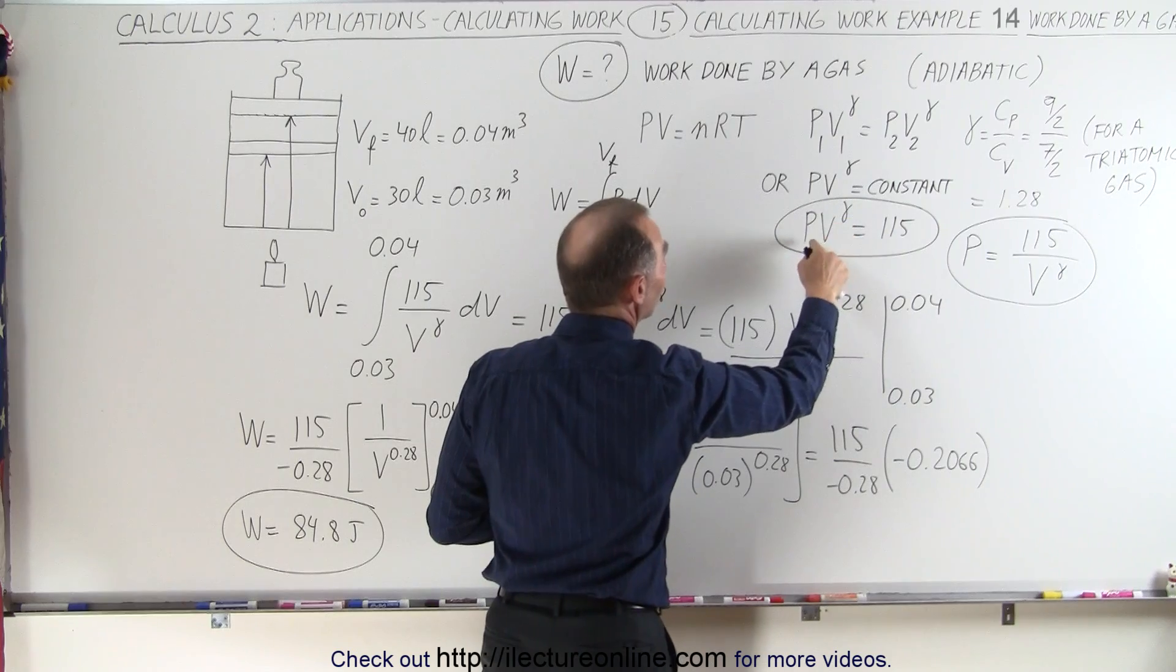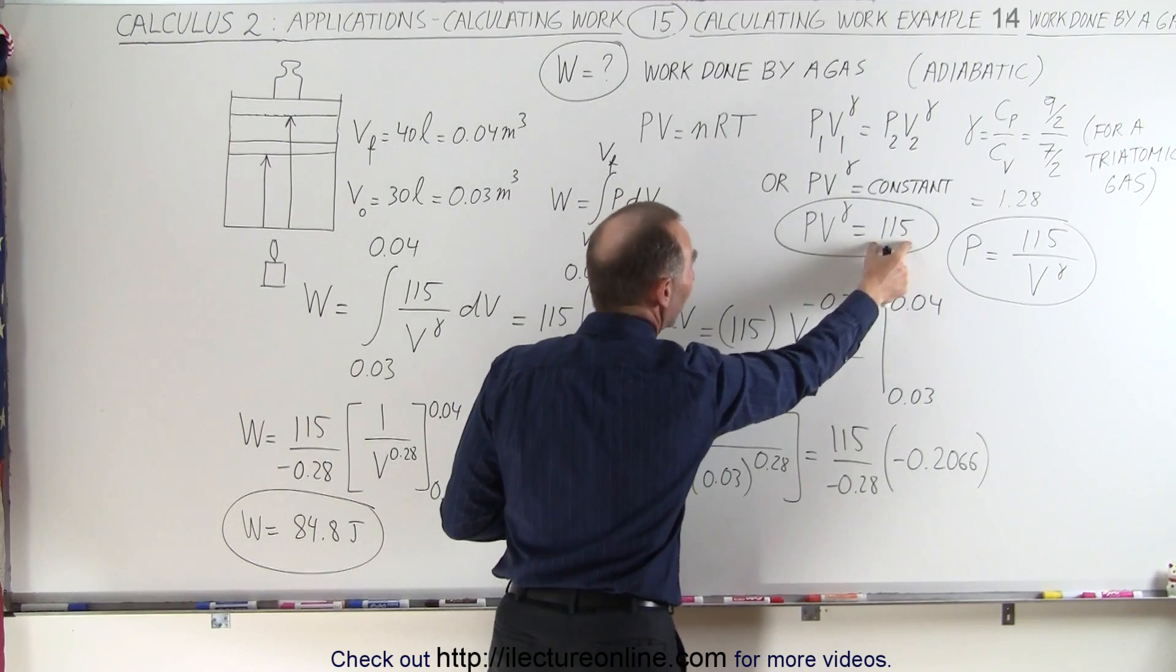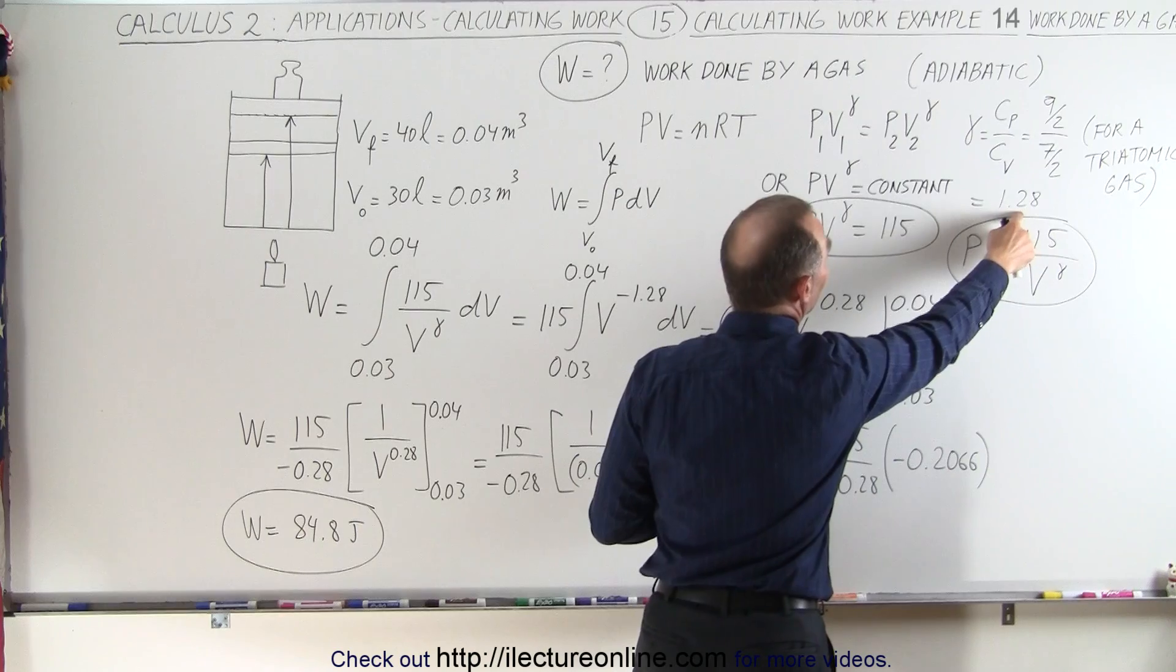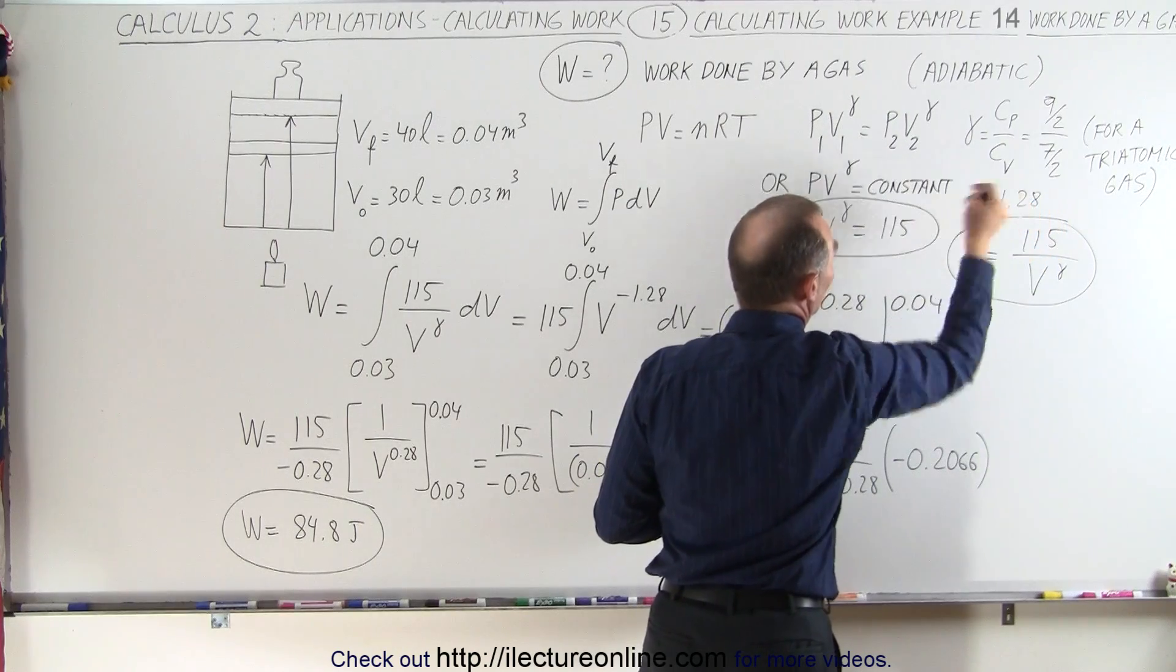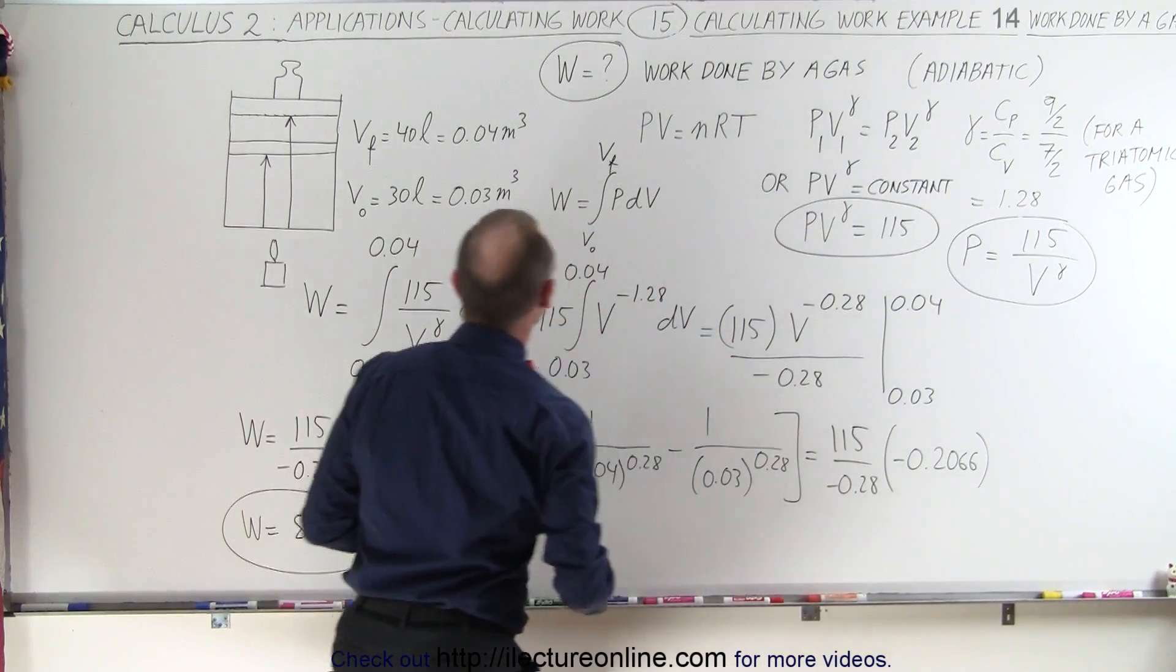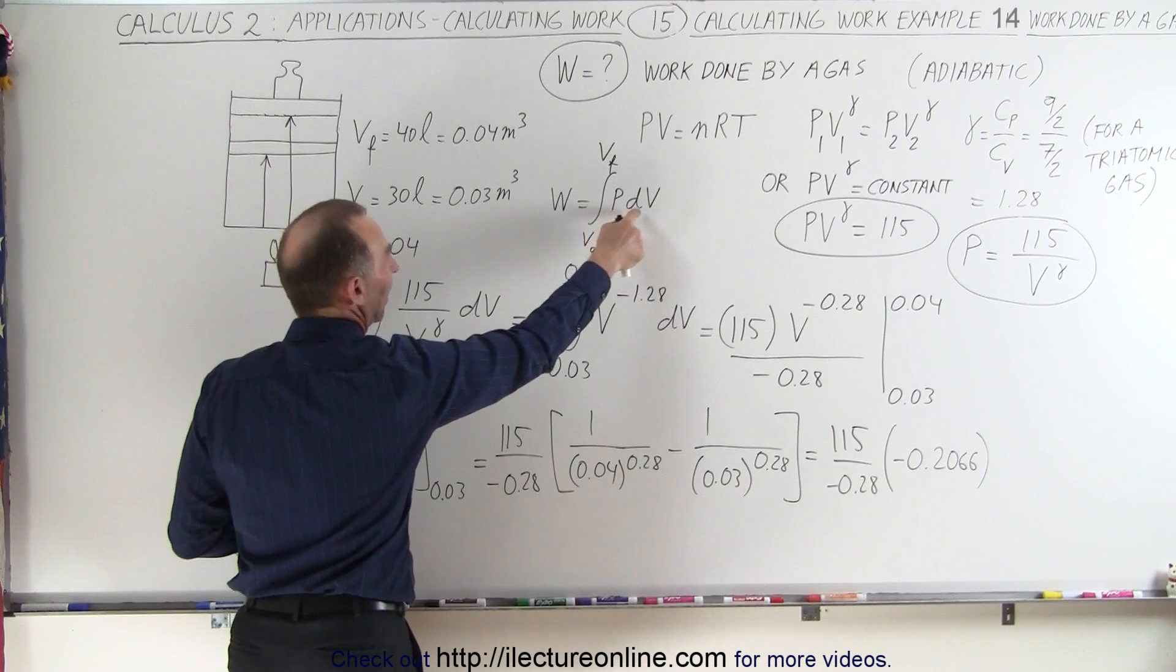You need to find a relationship between pressure and volume. In this particular case, pv to the gamma equals some constant. You realize that the gamma in this case, because it's a triatomic gas, is 1.28. We know that the work done is equal to pressure times dv.